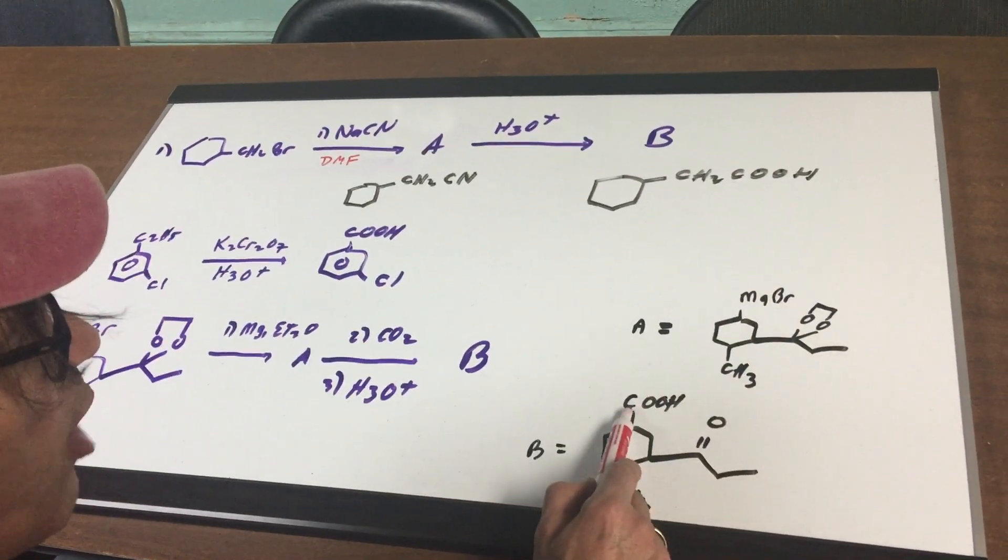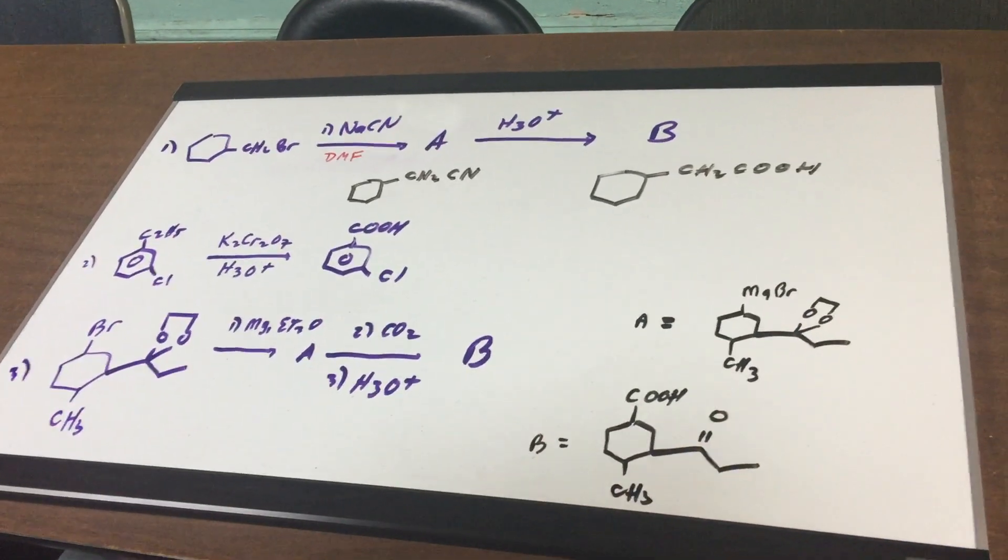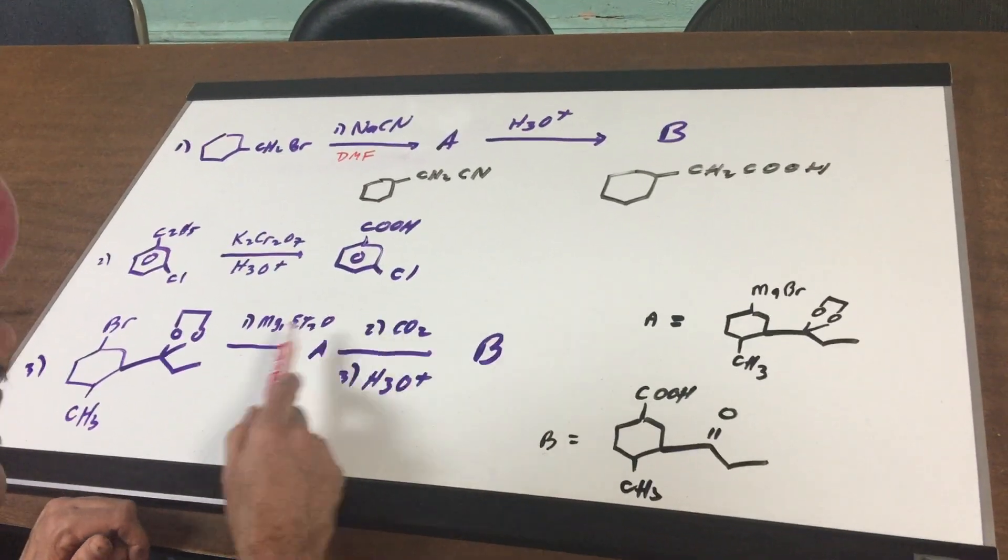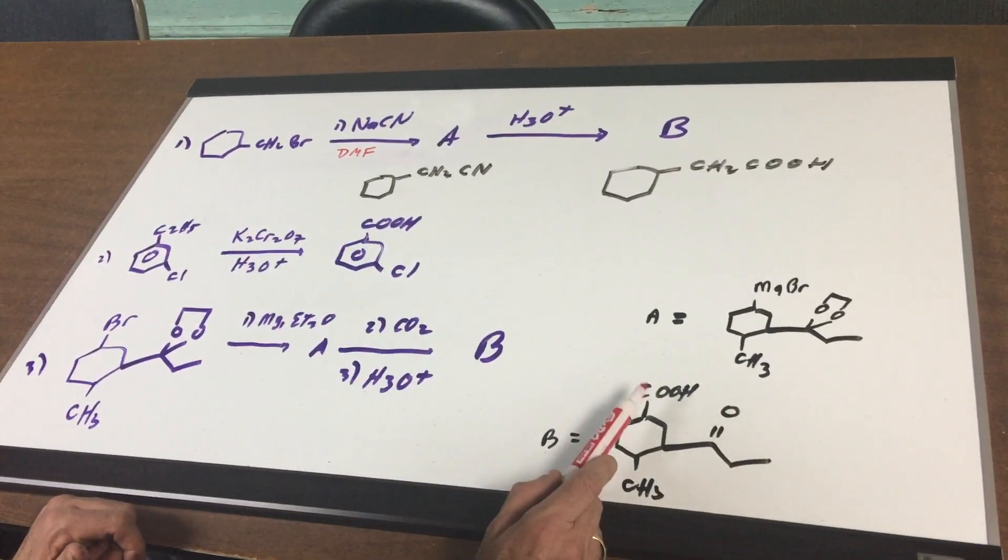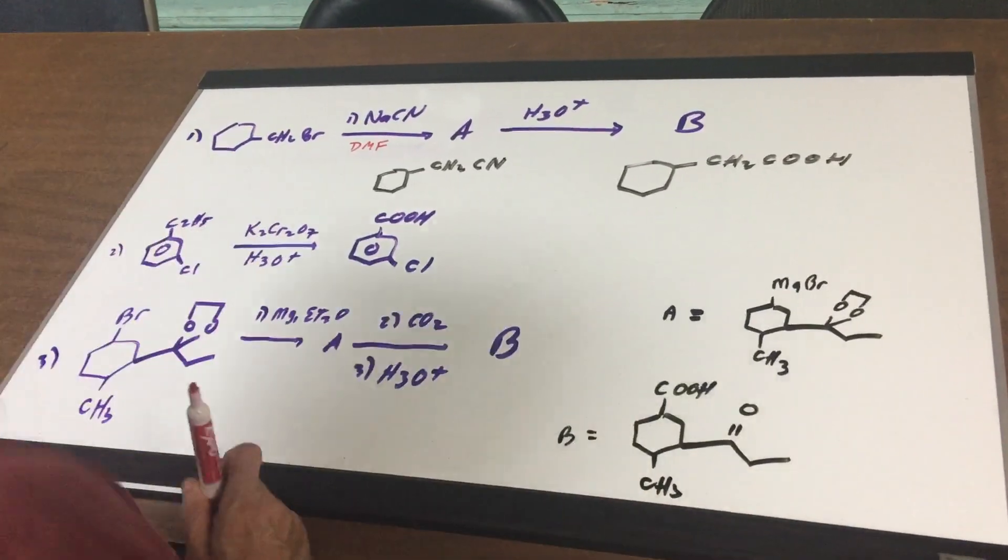it converts the grignard to a COOH group. And the acid also removes off the protecting group. So you hit two birds with one stone. So notice the carbonation of a grignard is a fantastic way to add an additional carbon onto your skeleton.